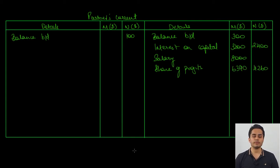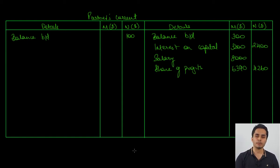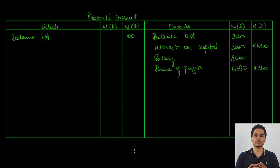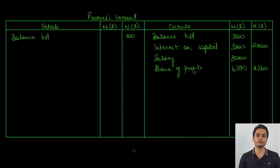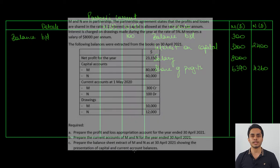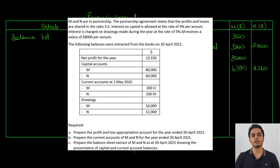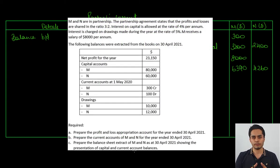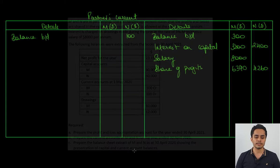On the debit side, we record whatever the firm is charging the partner. For example, interest on drawings appears on the debit side because the firm charges it over the partners on balances withdrawn for personal use. Apart from interest on drawings, the drawings amount itself also appears on the debit side, because whatever partners have withdrawn for personal use during the year must be reduced from their balances in the firm.